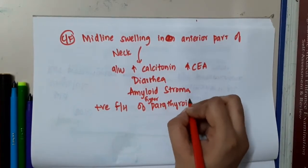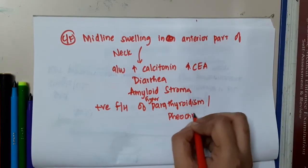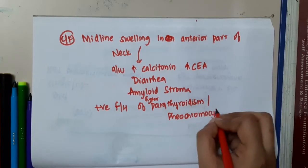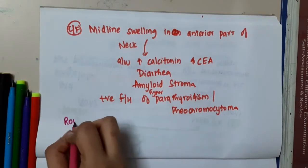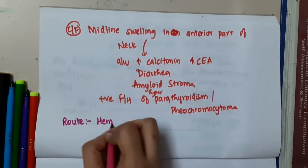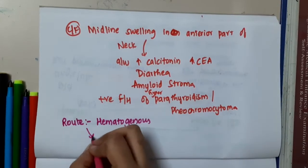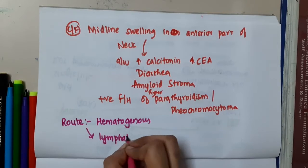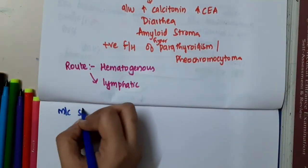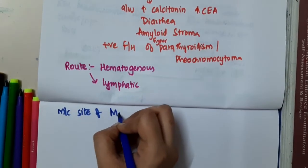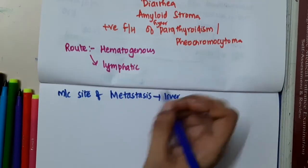There can be a positive family history especially in MEN syndromes, or there can be a positive family history of pheochromocytoma also. The tumor spreads either via the hematogenous route or via the lymphatic route. The most common site of metastasis is the liver.